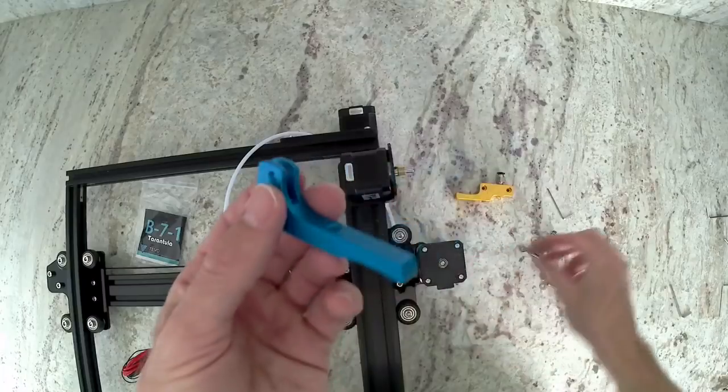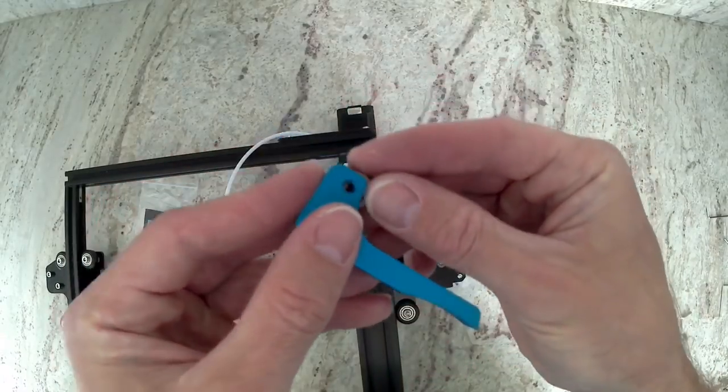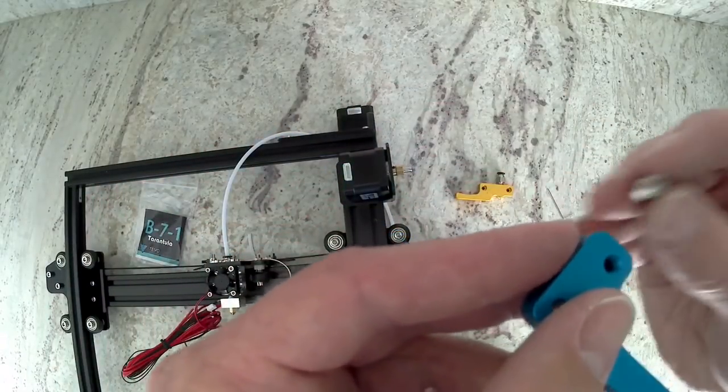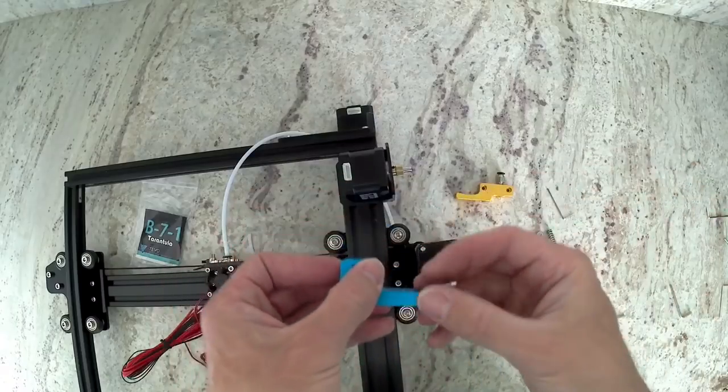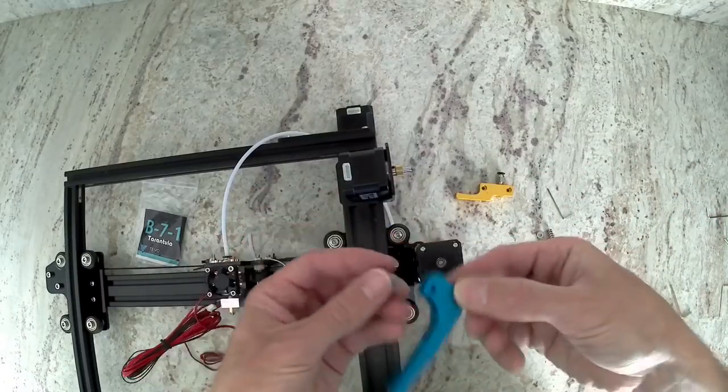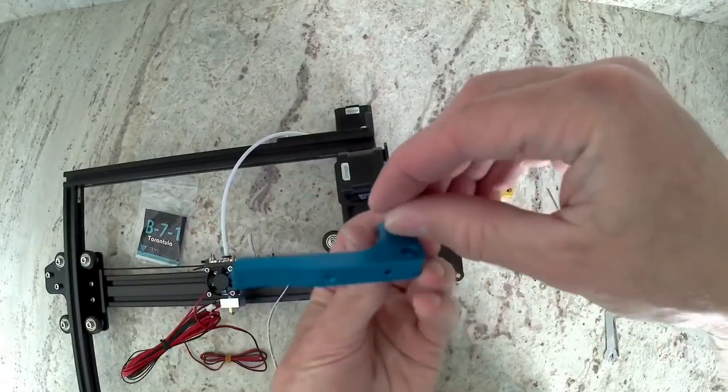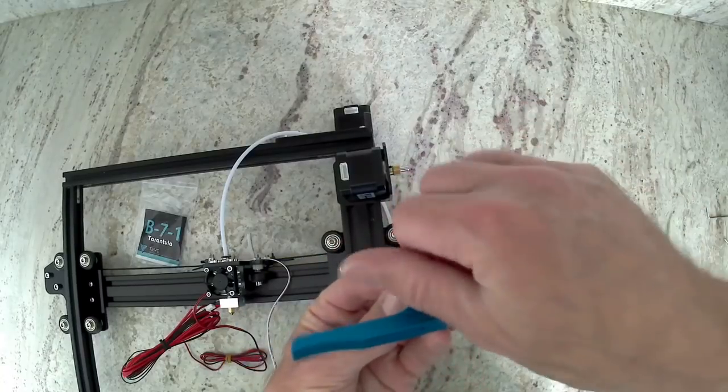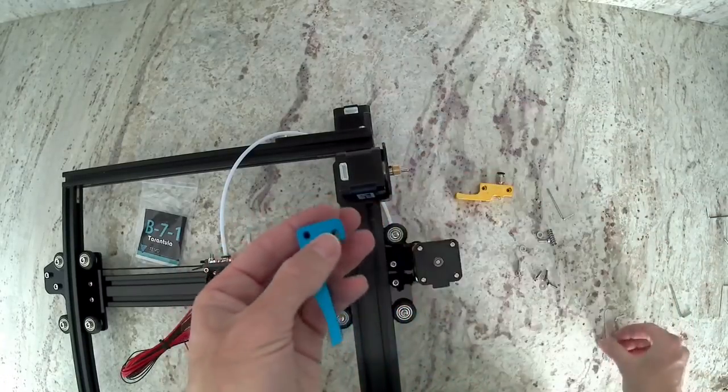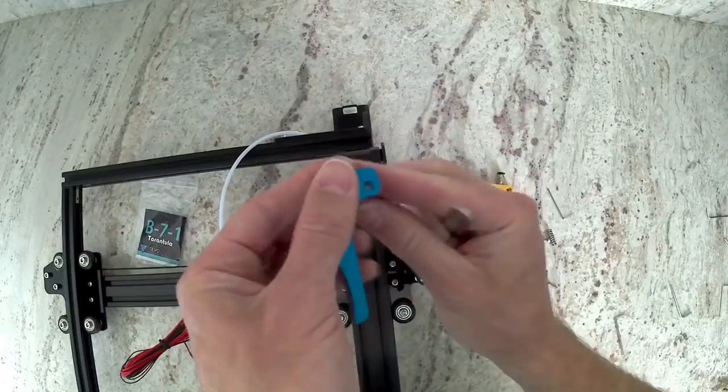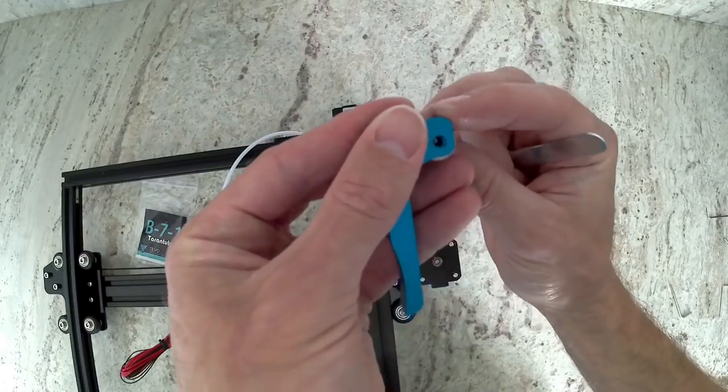Then get the blue piece, the bearing, and the bolt shown here. Go ahead and install that. It does need to be installed into the correct side, so make sure you install that into the side that I'm going to show you here.